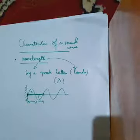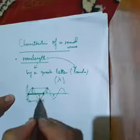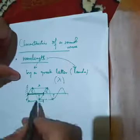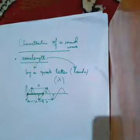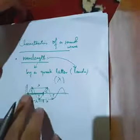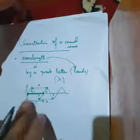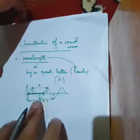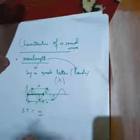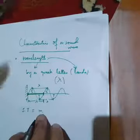Wavelength is also defined as the distance between two consecutive crests or two consecutive troughs. So wavelength has two definitions: the length of a wave consisting of one crest and one trough, and the distance between two consecutive crests or two consecutive troughs. The SI unit of wavelength is simply the meter.